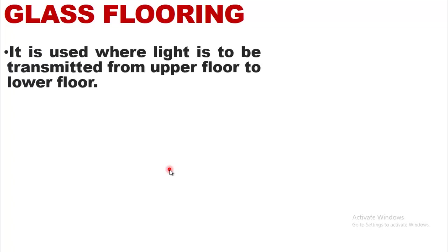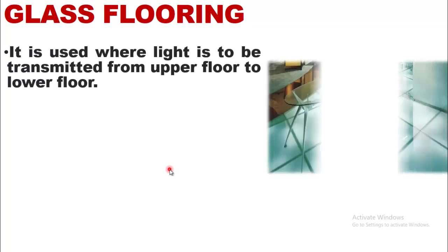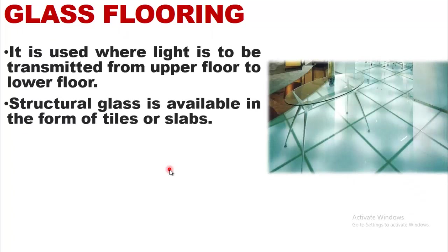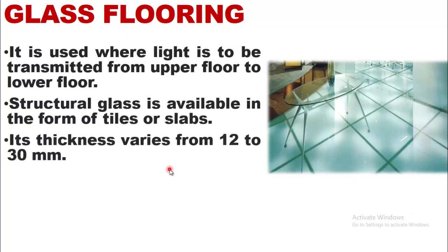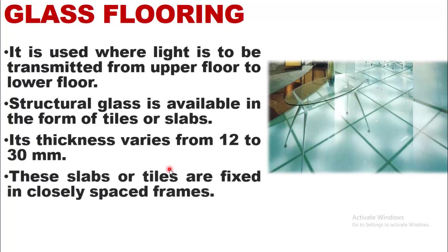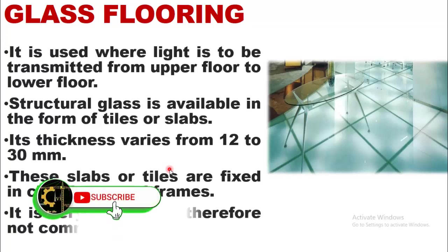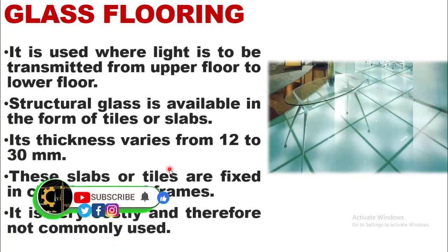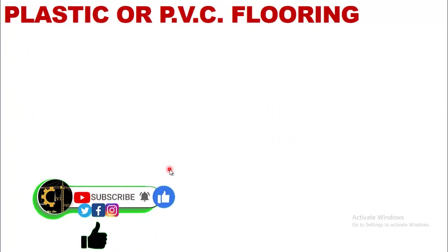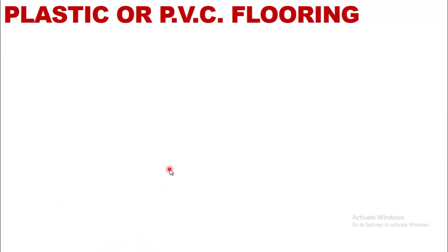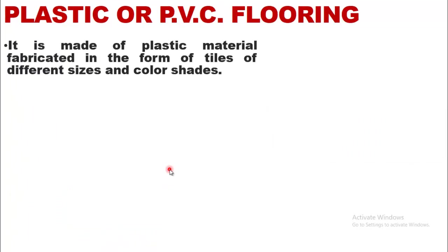Glass flooring is used where light is to be transmitted from an upper floor to a lower floor. Structural glass is available in the form of tiles or slabs, with thickness varying from 12 to 30 mm. These slabs or tiles are fixed in closely spaced frames. It is very costly and therefore not commonly used.